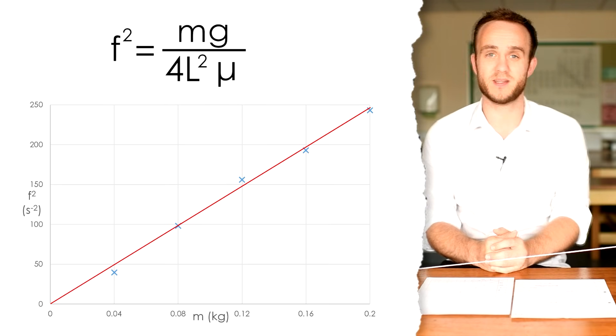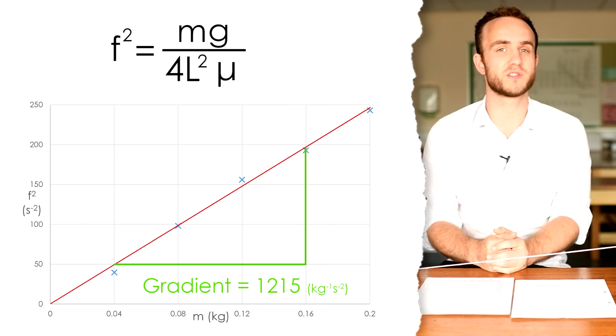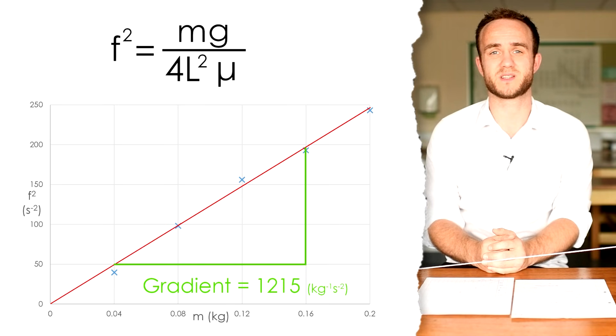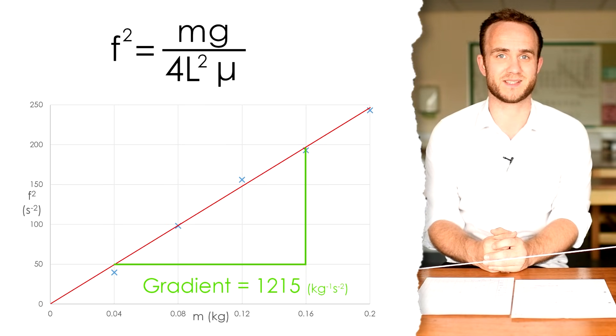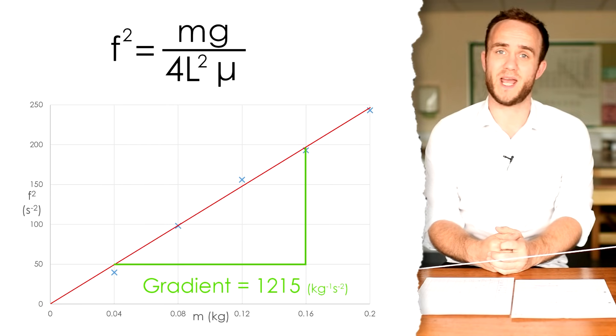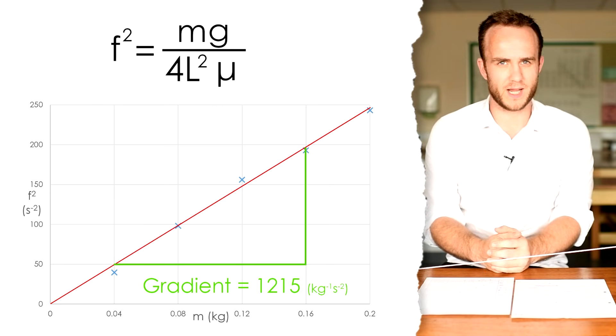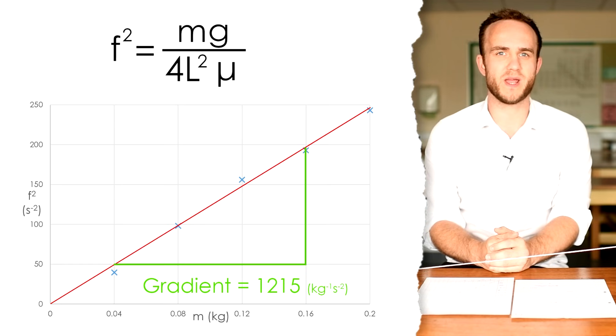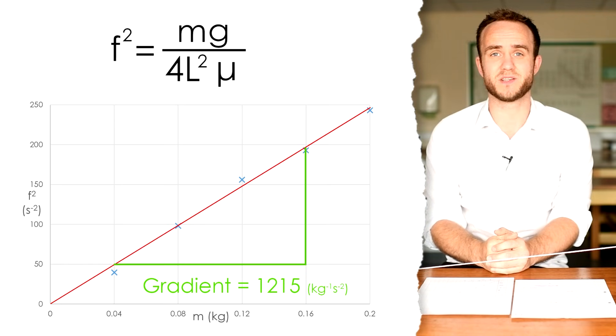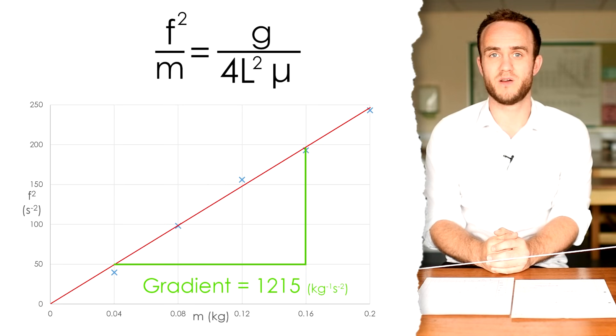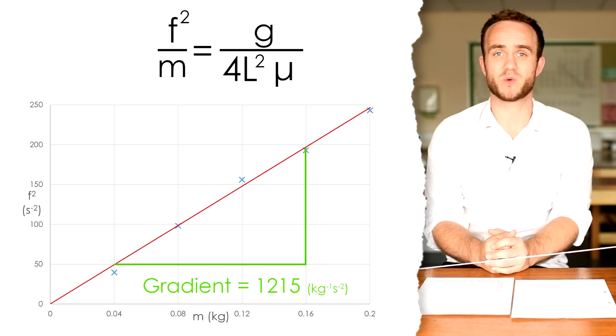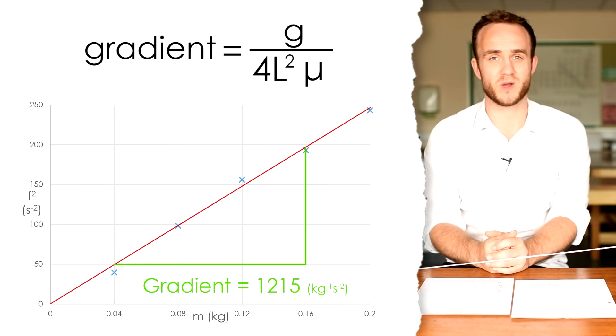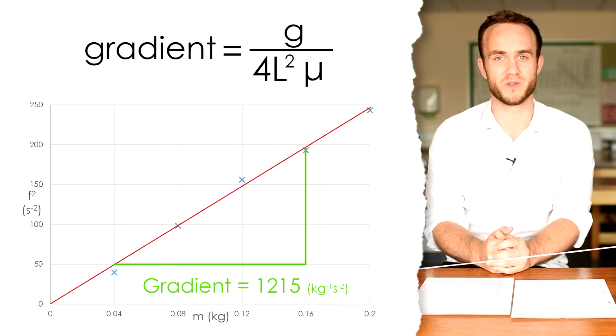That's always the case in these practicals. And this ends up being, for me, 1,215. Now, the gradient of a graph is calculated by the change in whatever's on the y-axis divided by the change in whatever's on the x-axis. So, it's going to be F squared divided by M. Looking at our equation, if I rearrange it to get F squared divided by M, I end up with G over 4L squared mu. Seems complicated, but we're nearly there. So, if F squared over M is equal to 1,215, that means that G over 4L squared mu is also equal to 1,215.